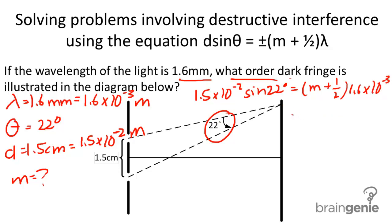When we solve for m, we get an m value equal to 3, indicating that this is the third order dark fringe.